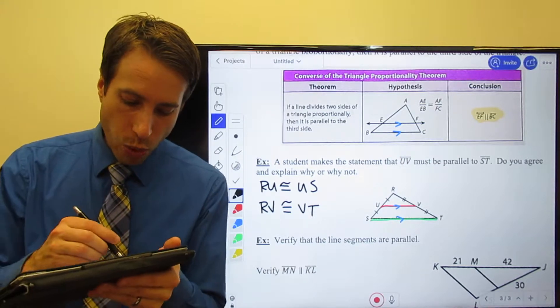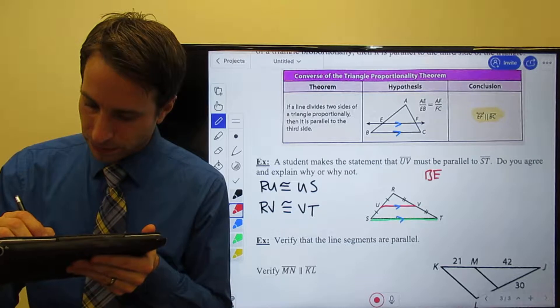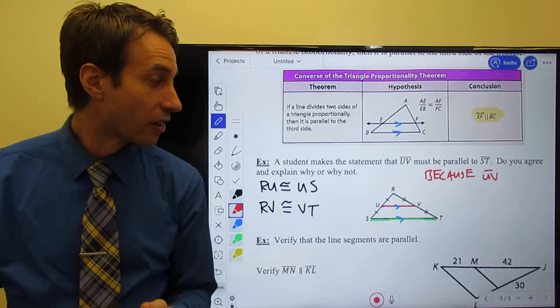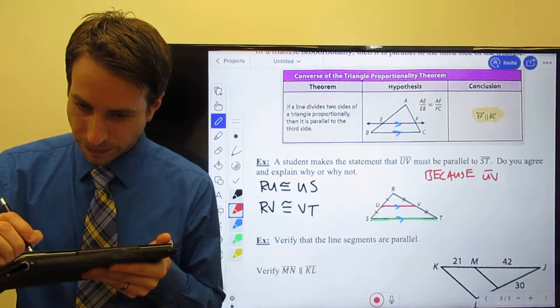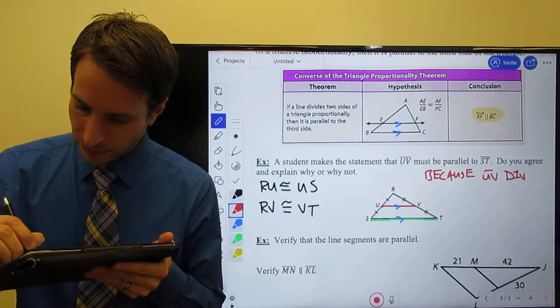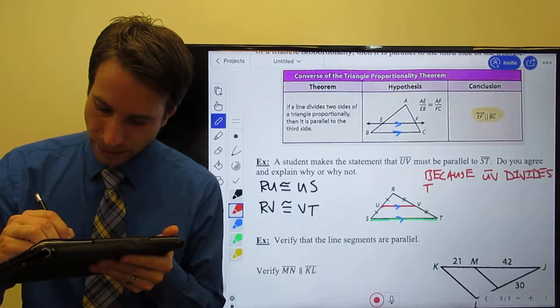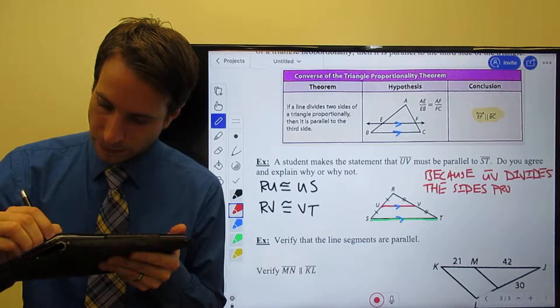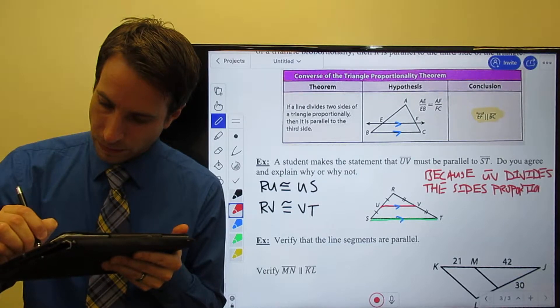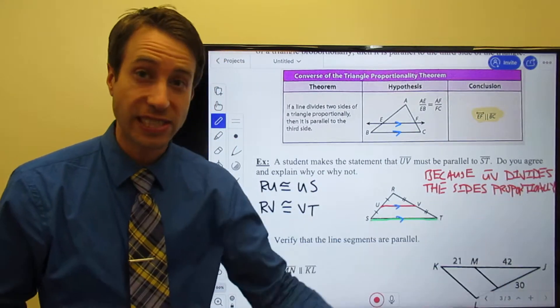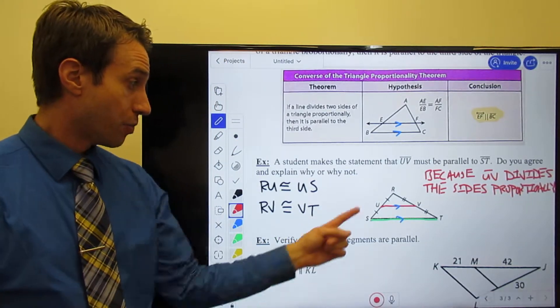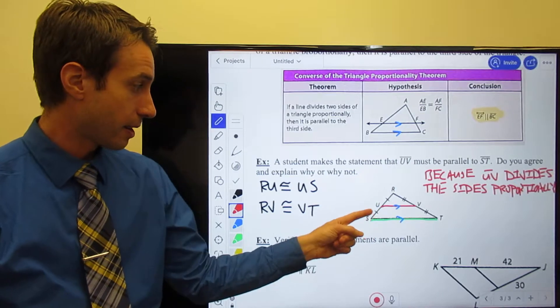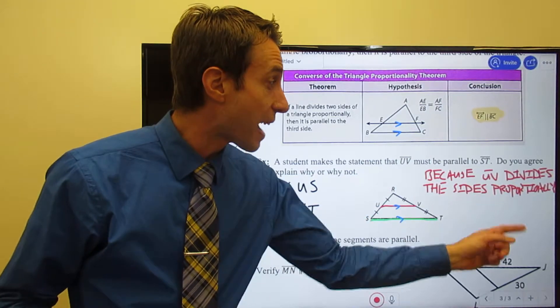Okay. Well, what does this mean? Well, what it means is because the line UV divides, I apologize for squeezing, divides the sides proportionally. So because UV does divide the sides proportionally, how do I know that they're proportional? They're congruent to each other. They both have the exact same measure. They're not just some random numbers. They have the exact same measure. They are proportional.